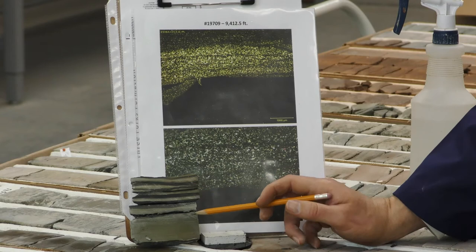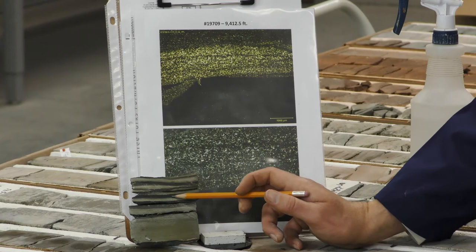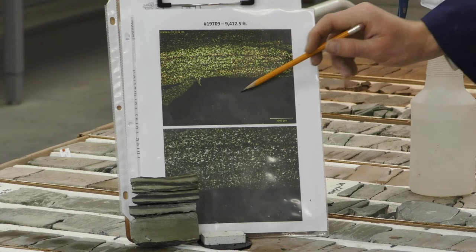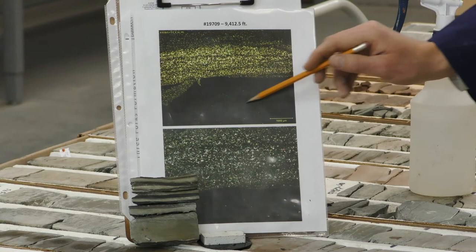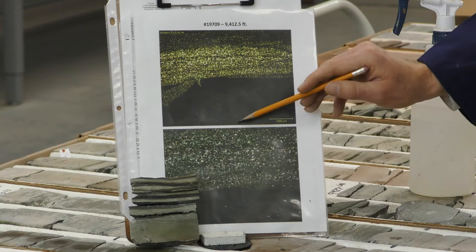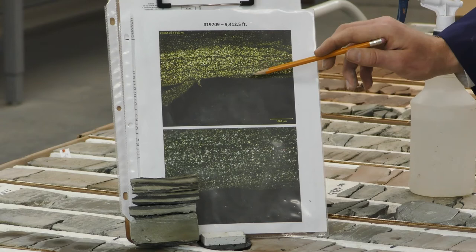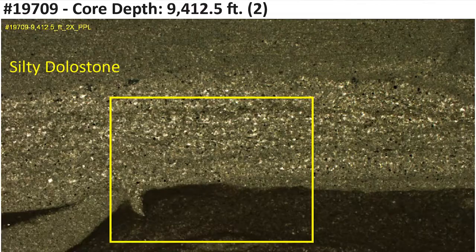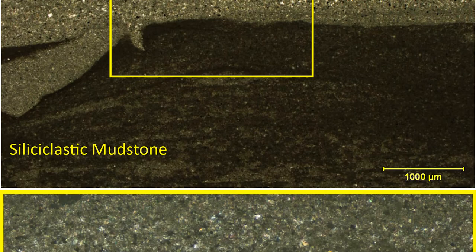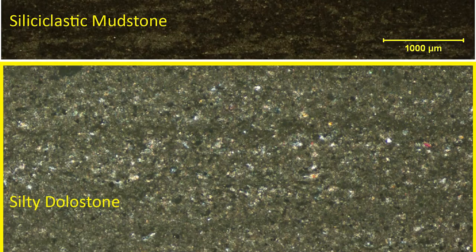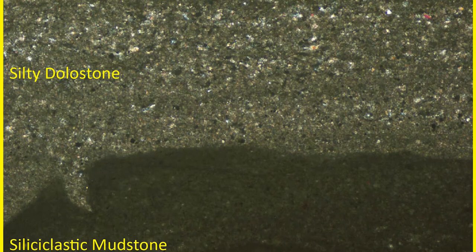In thin section for the interlaminated facies interval, you can see the laminated silty dolostone and the featureless horizontal green-gray mudstone laminations. The siliciclastic mudstone lamination has only a few very small silt-sized grains in an otherwise clay-rich matrix. Moving up into the laminated silty dolostone, there is a very abrupt contact with coarser sediment at the base that then fines upward. This siliciclastic mudstone is the finest-grained, lowest-energy deposit within this whole section.